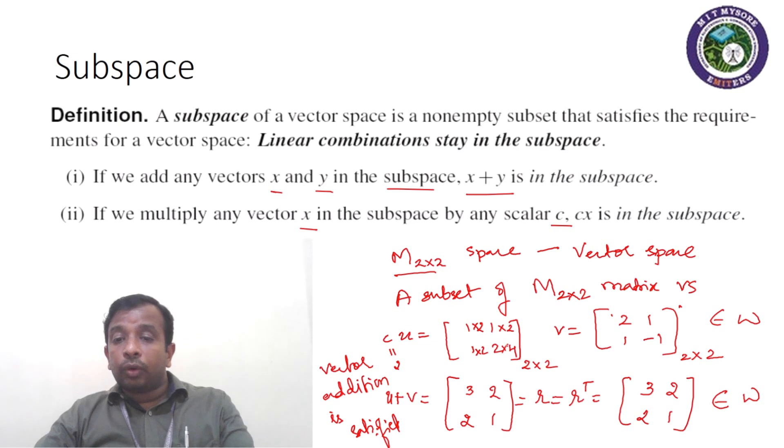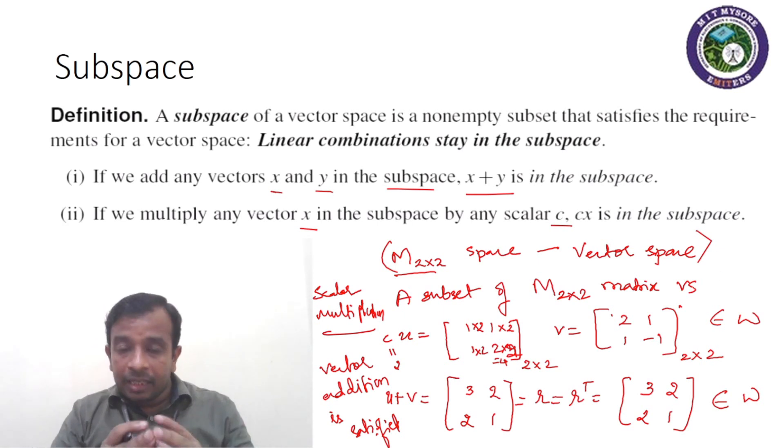So that would make it a symmetric matrix again. So scalar multiplication is also satisfied. Hence, for vector space M2 cross 2, symmetric matrix subset is a subspace because it satisfies both the axioms or laws required to be declared as vector space—that is, vector addition and scalar multiplication.